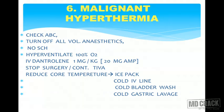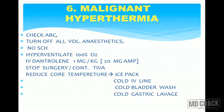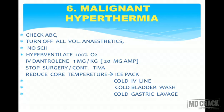Treatment of malignant hyperthermia: maintain ABC — airway, breathing, circulation. Turn off all volatile anesthetics; no suxamethonium should be given. Hyperventilate the patient with 100 percent oxygen. IV dantrolene, available as 20 mg ampoules, should be given at 1 mg per kg intravenously. Stop the surgery, or if surgery must continue, use TIVA — total intravenous anesthesia. Reduce core body temperature using ice packs, cold IV fluids, cold gastric lavage, and cold bladder wash.